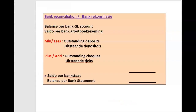Whenever you get something like that, write down for yourself the format of the bank reconciliation. If we start with a bank GL account balance, we deduct outstanding deposits — because they increase that balance and we need to remove them — and we add back outstanding checks, since they decreased the balance. That gives us the balance as per the bank statement.